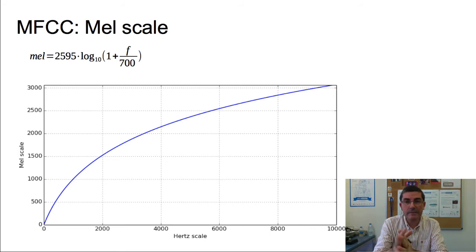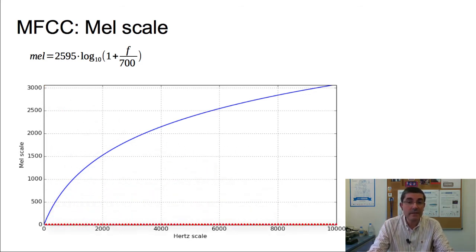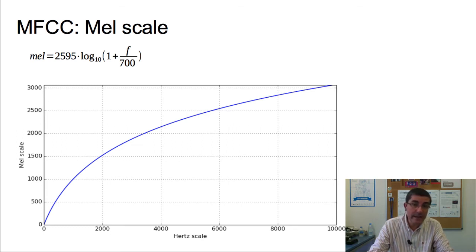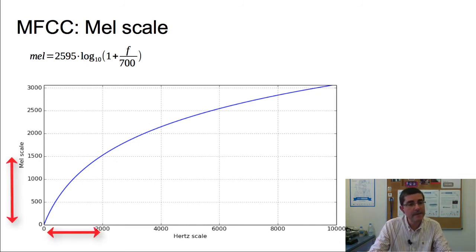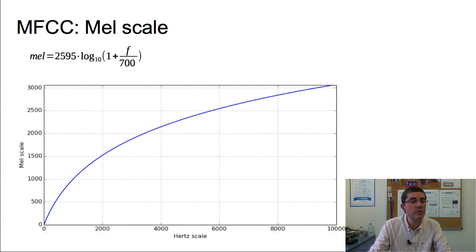The mel scale approximates the frequency resolution of the auditory system. It relates the perceived frequency, or pitch, of a pure tone to its actual measured frequency. Humans are much better at discerning small changes in pitch at low frequencies than at high frequencies, so by incorporating this scale, spectral features match more closely with what we actually hear. The mel scale puts more emphasis on low frequencies and less emphasis on high frequencies — a redistribution of frequency components used in MFCC analysis.